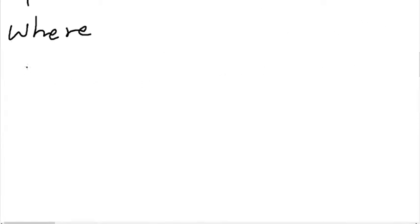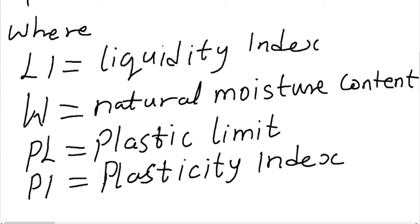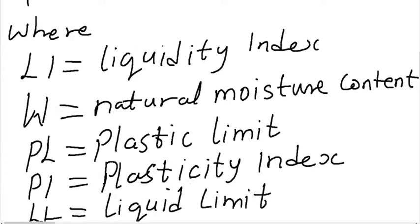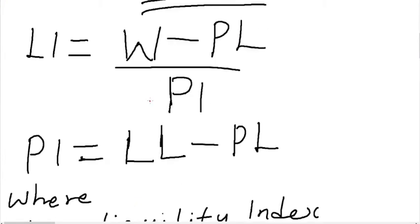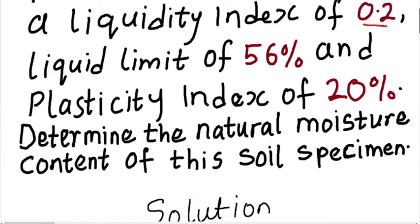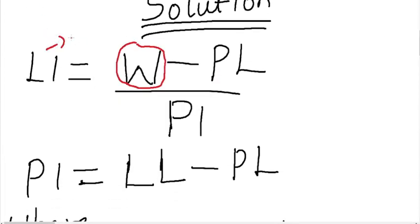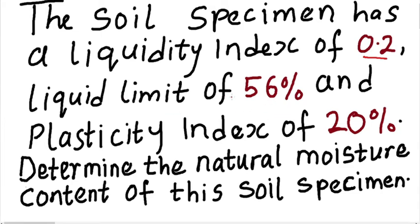Where LI stands for the liquidity index. To find the natural moisture content, we are going to make W the subject formula. As you can see from the equation, we are given the value for the liquidity index, which is 0.2. We also get a value for the liquid limit, which is 56%.